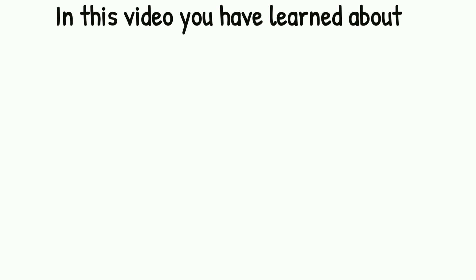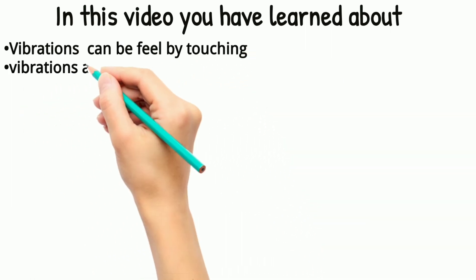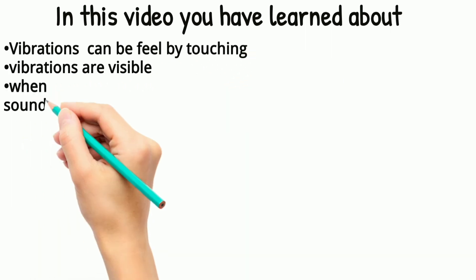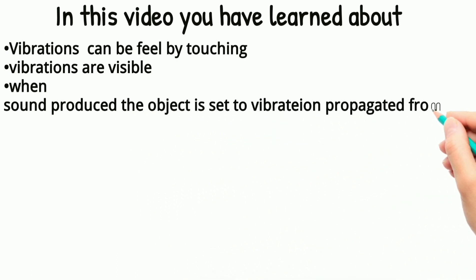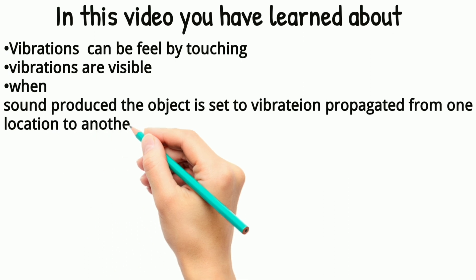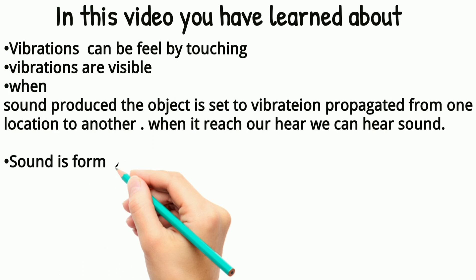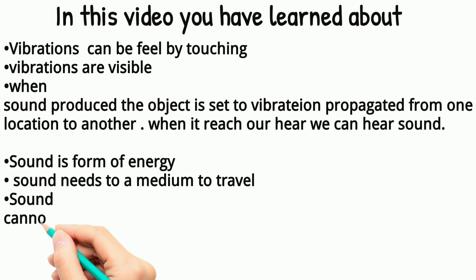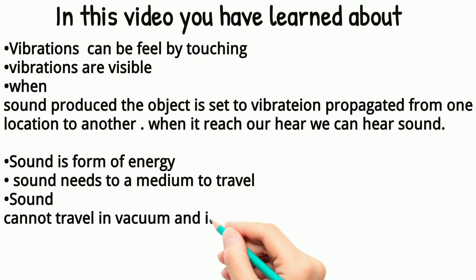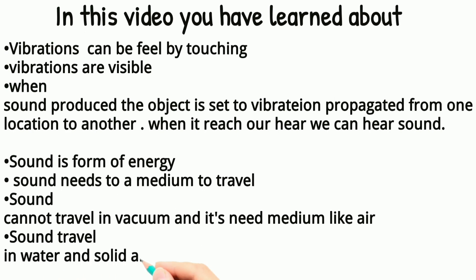In this video, you have learned that vibration can be felt by touching and vibrations are visible. When sound is produced, the object is said to vibrate and sound is propagated from one location to another. When it reaches our ear, we can hear sound. Sound is a form of energy. Sound needs a medium to travel. Sound cannot travel in a vacuum and it needs a medium like air.